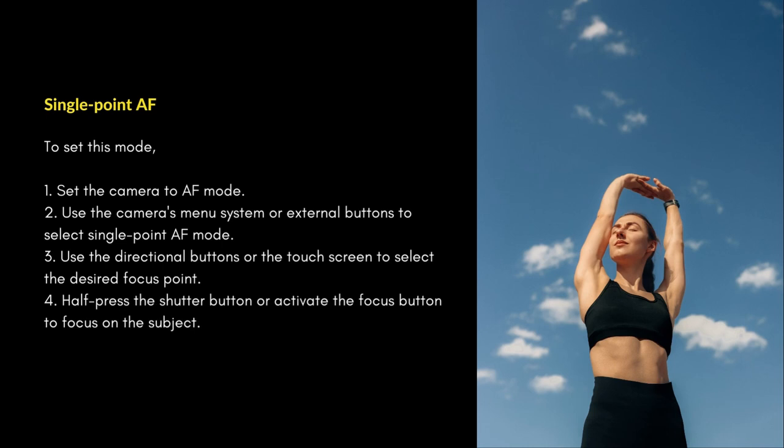To set single point AF, set the camera to AF mode and use the camera's menu system or external buttons to select single point AF mode. Use the directional buttons or the touch screen to select the desired focus point, then half-press the shutter button or activate the focus button to focus on the subject.